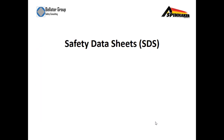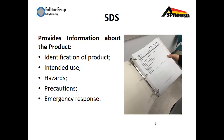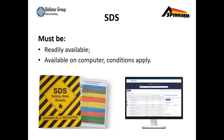Safety Data Sheets — SDS. SDSs provide information about the product: the identification of the product, the intended use, hazards, precautions, and emergency responses. SDSs must be readily available, whether it's a hard copy or available on the computer. If SDSs are available on the computer, all workers must be trained on how to access them.